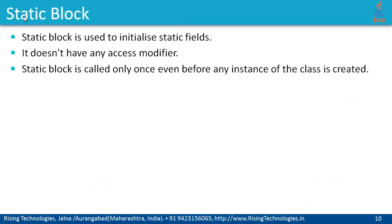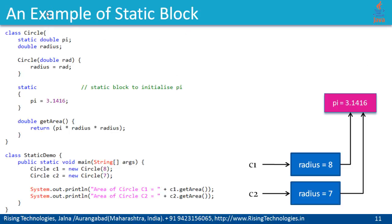The next concept is the static block. A static block is used to initialize a static field. In our previous session we learned about constructors. Constructors are used to initialize instance data members or instance fields. But if you want to initialize static fields, you can make use of a static block. This static block doesn't have any access modifier, and this block is called only once, even before any instance of the class is created.